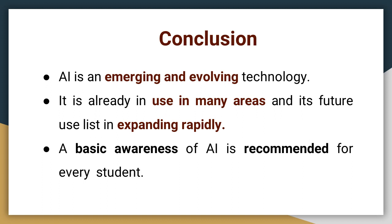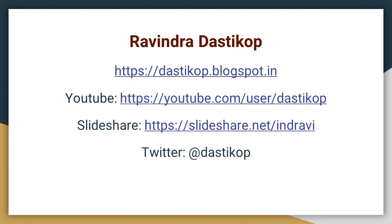In this brief video session, I provided you an introduction to the area of artificial intelligence. The presentation started with an introduction to its history, application areas and the different subfields within it. To conclude: AI is an emerging and evolving technology, already in use in many areas and its future use list is expanding rapidly. A basic awareness of AI is recommended for every student. This is Ravinder Dastikup ending this presentation. You can see this and all other presentations at the URLs given above, and if you would like me to add another topic, kindly send it to the URL addresses given here. Thank you.